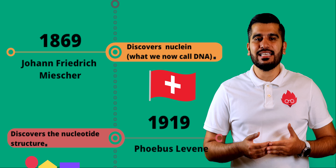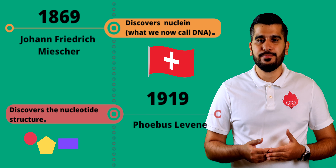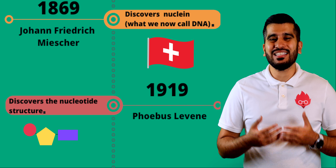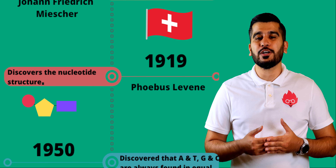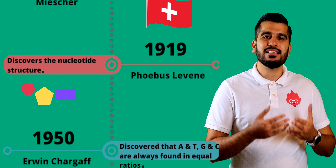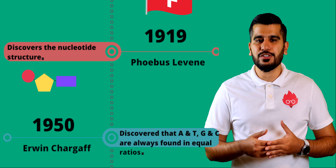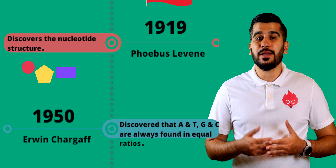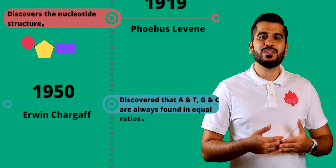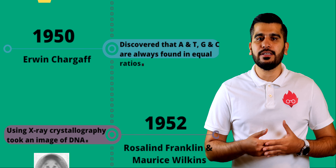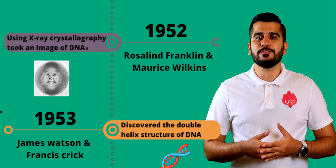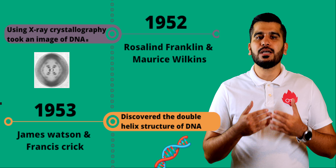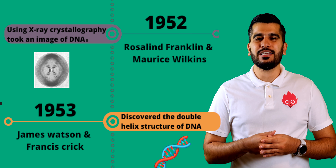DNA was first identified in the 1860s by a Swiss chemist. In the subsequent years that followed, more and more information was revealed about the structure of DNA, which included things such as the basic nucleotide structure and the base pairing of DNA. This, combined with X-ray crystallography, contributed to Watson and Crick's discovery of the three-dimensional double helical model for the structure of DNA.